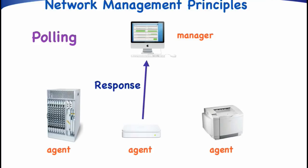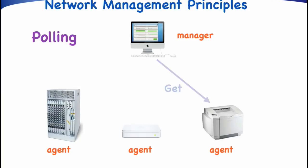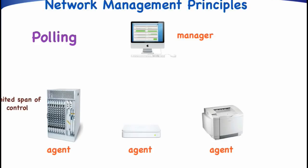There are agents, however, that have rather poor implementations and need hundreds of milliseconds or even seconds before being able to send the response. In our example, the manager now polls the third agent. But in case of larger networks, the manager may have to poll thousands of agents. Since polling may take quite some time, the span of control for a single manager will be limited.